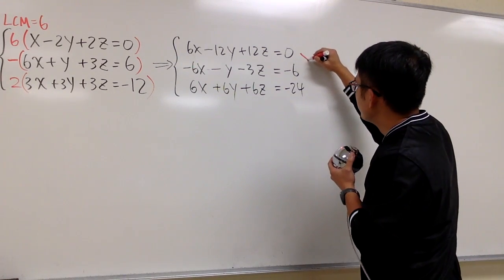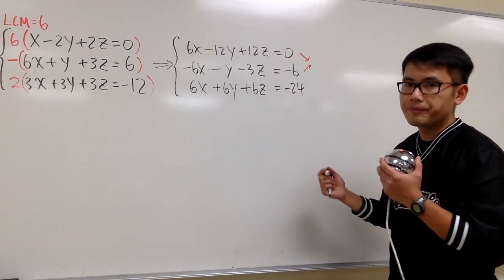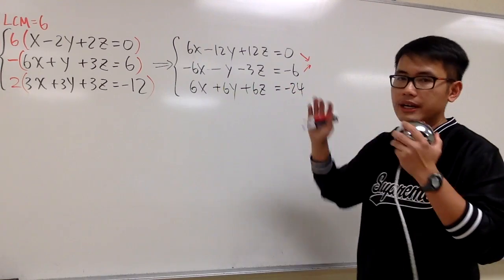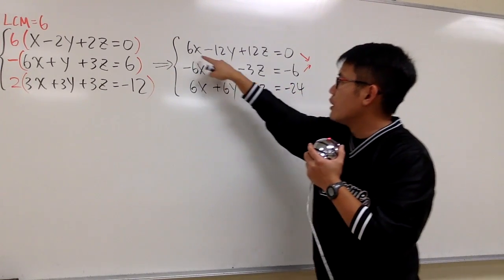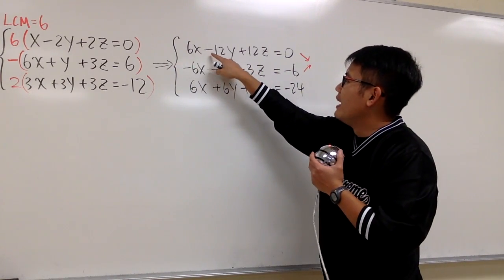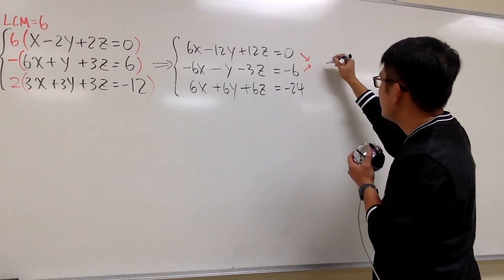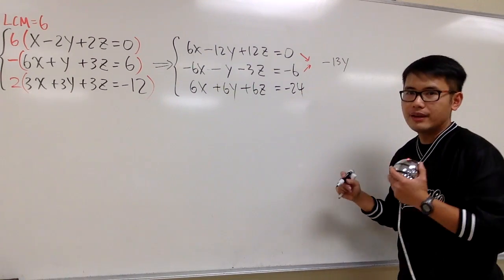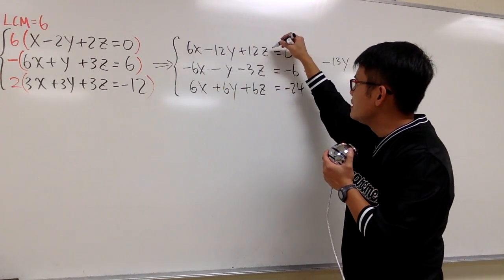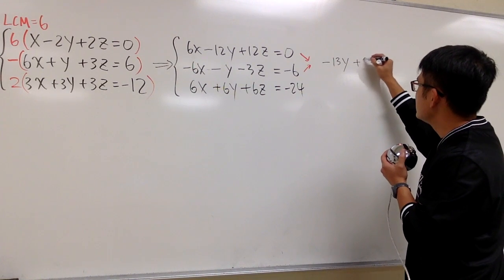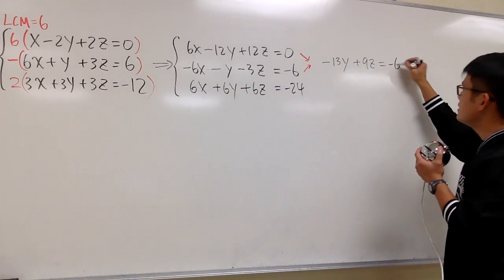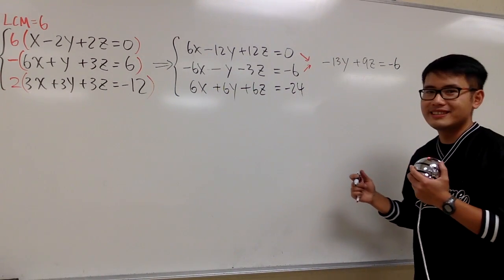First, we are going to combine the first and second equations together, doing this in our head. I'm not going to cross them out, because I have to use the second equation again. 6x minus 6x is 0 — that's gone. Negative 12y minus y gives us negative 13y. Plus 12z minus 3z gives us positive 9z. And this equals 0 plus negative 6, which is negative 6.